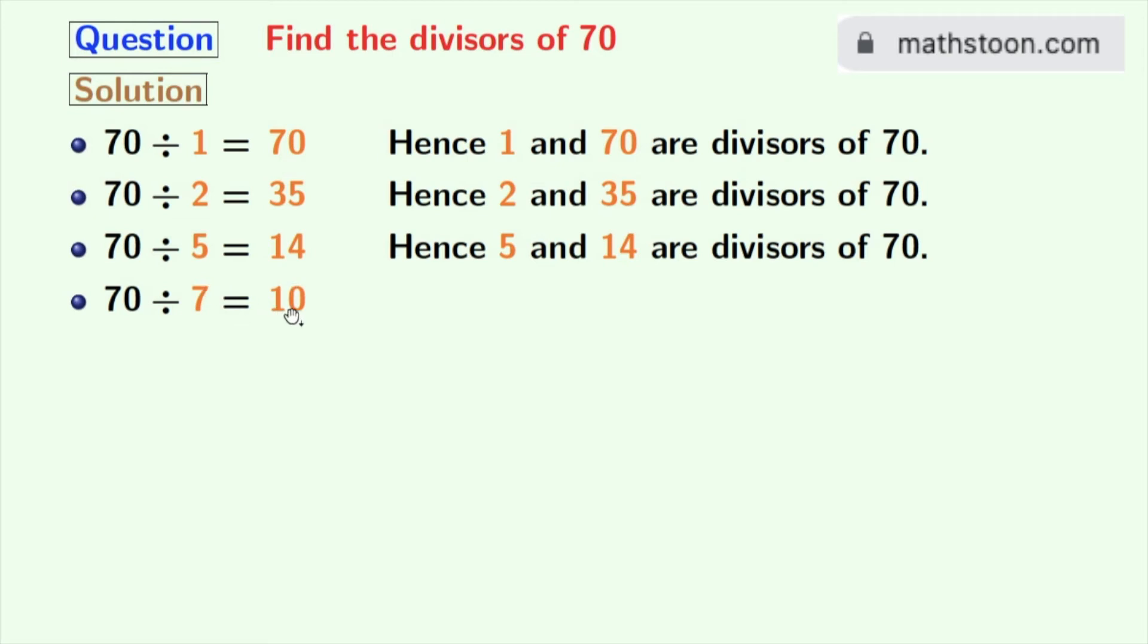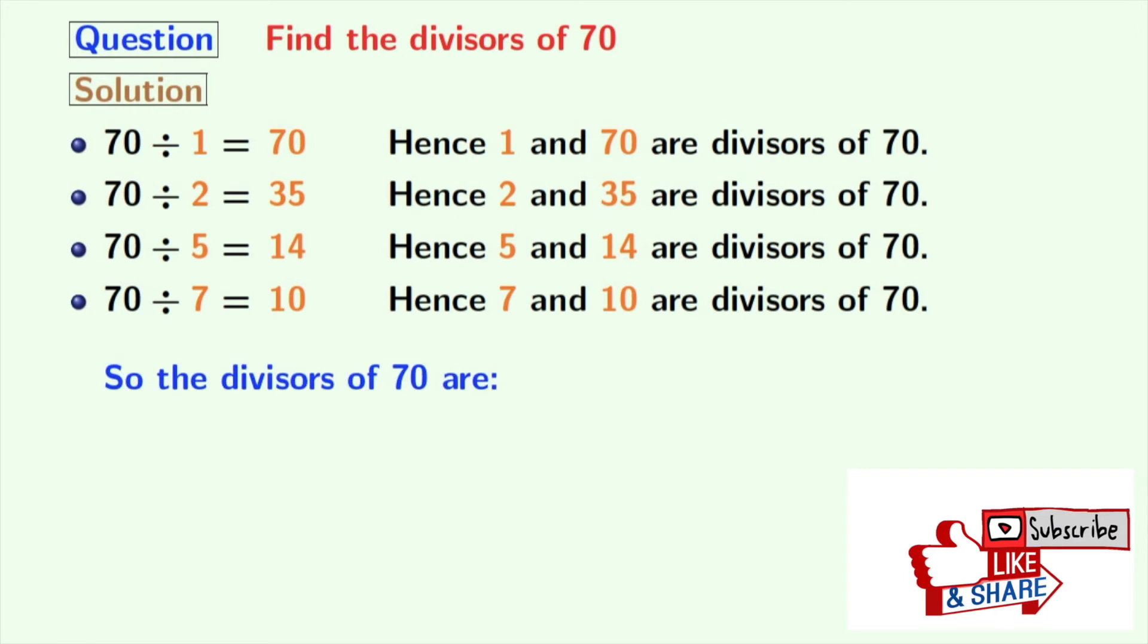There is no number between 7 and 10 which can divide 70, so we will stop right now. So we have all the divisors of 70 now, which are in orange colors.